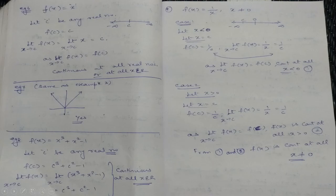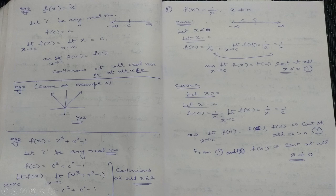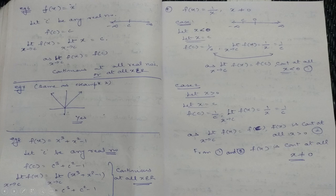Example 6: f(x) = x, the identity function. Again, no point is given, so we check at all real values. Let c be any real value. f(c) = c. Limit as x→c of f(x) = limit as x→c of x = c. f(c) is also c. Therefore, limit as x→c of f(x) = f(c), so the identity function is continuous at all x ∈ ℝ.